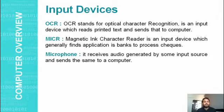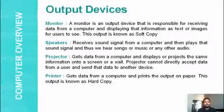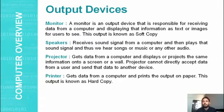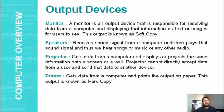Now we move to output devices. The first device is the monitor — a common output device responsible for receiving data from the computer and displaying information as text or images for users to see. The output produced on the monitor is called soft copy. Speakers are used to receive sound signals from the computer and play them so we can hear music or songs.